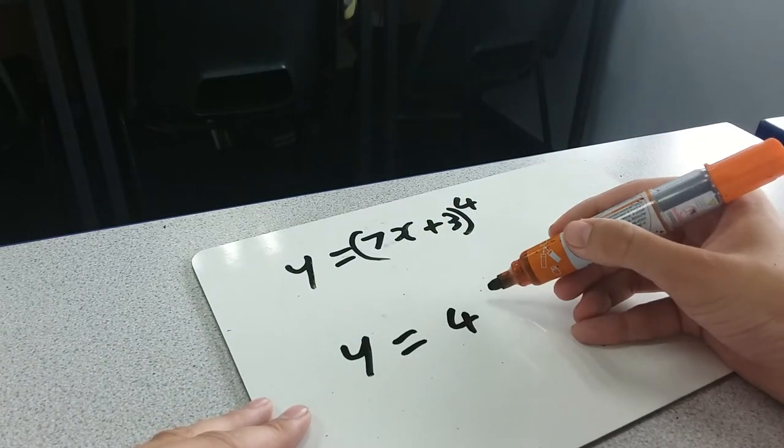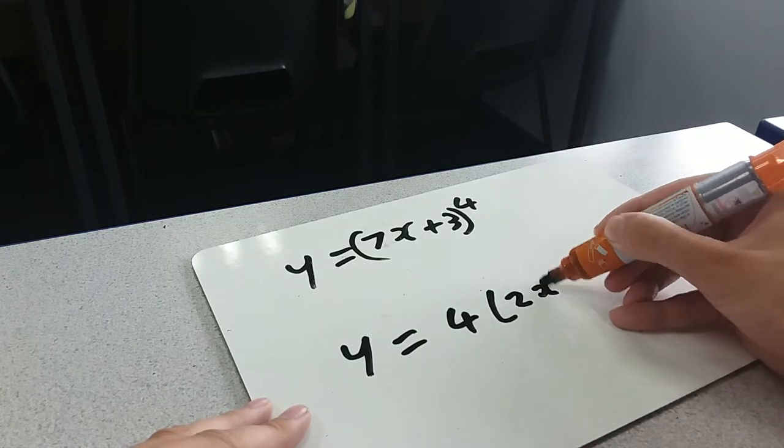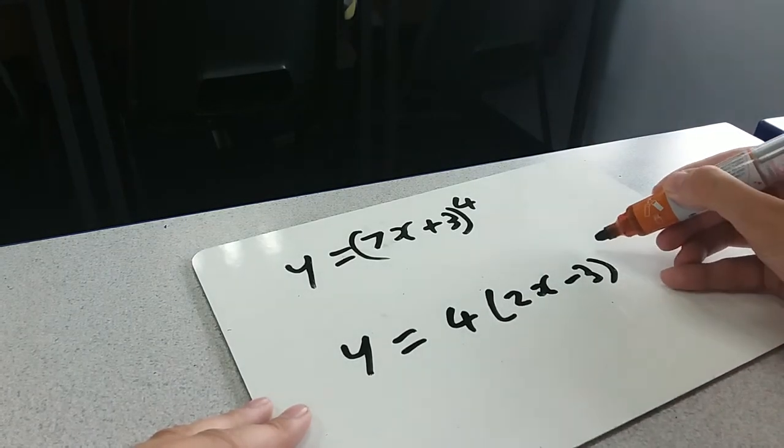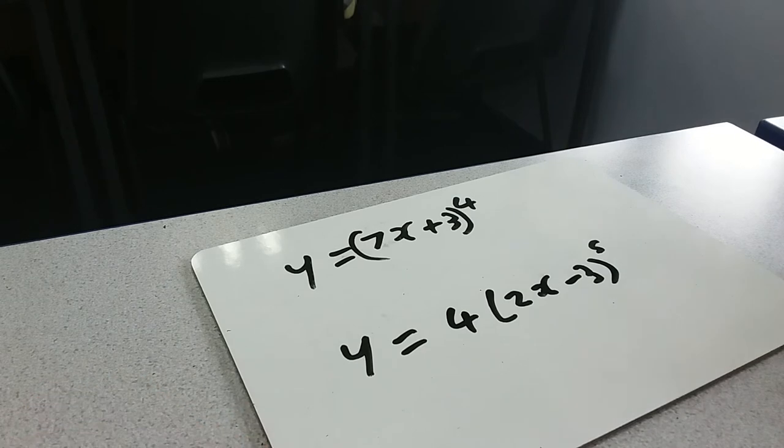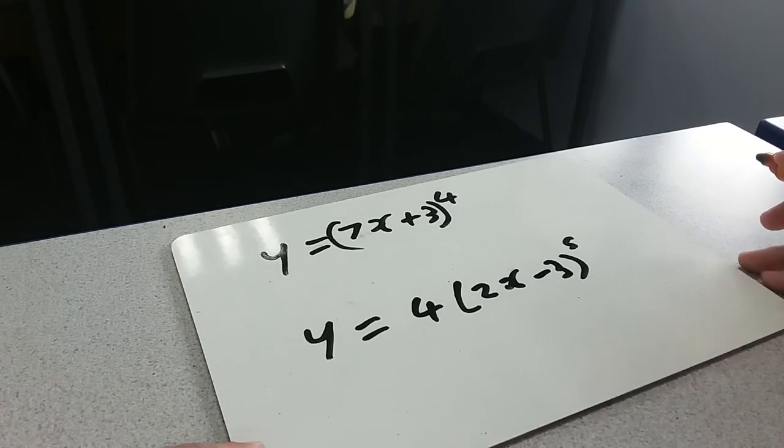We have a coefficient at the beginning. So, y equals 4, 2x minus 3 to the power of 5. If you want to pause the video, I'll go through the answer in a couple of seconds.